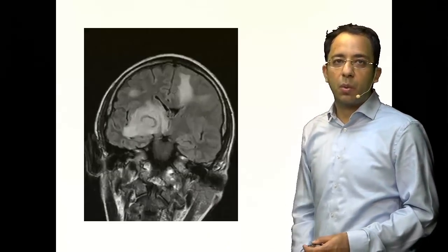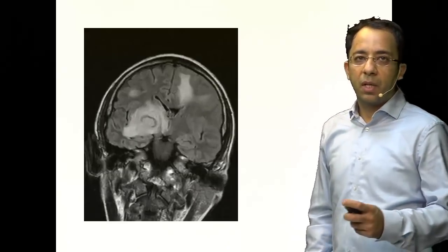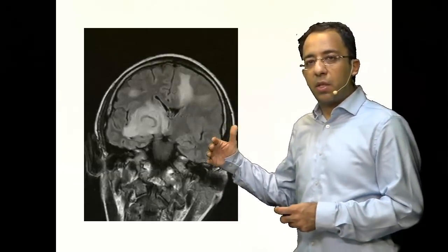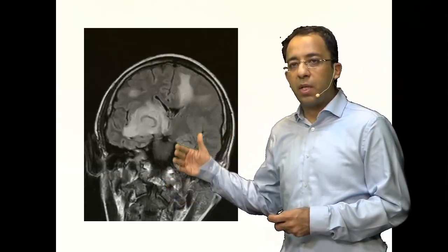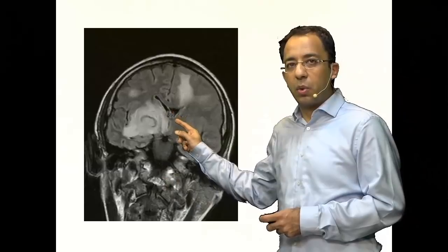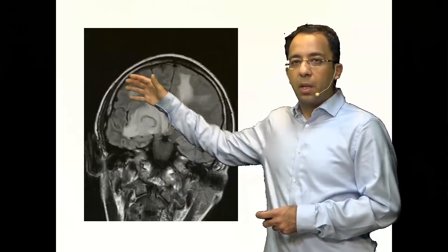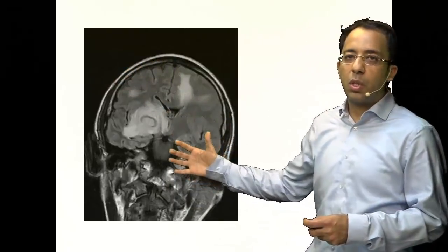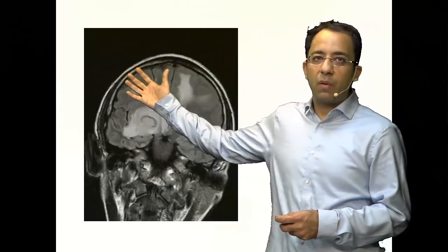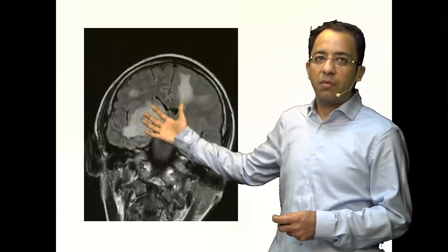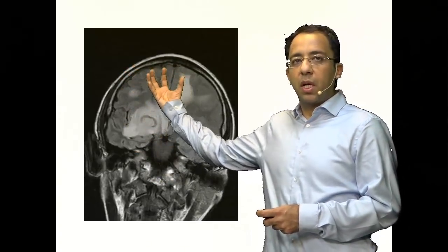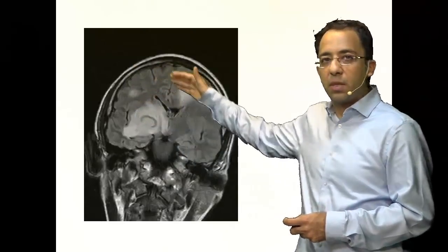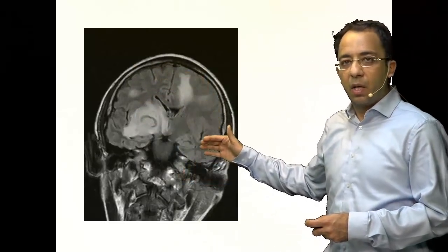This is a FLAIR image — it is a T2-weighted image with dark CSF. You can notice the CSF is dark, but the brain parenchyma retains the characteristics of a routine T2-weighted image. The gray matter appears brighter compared to the white matter.